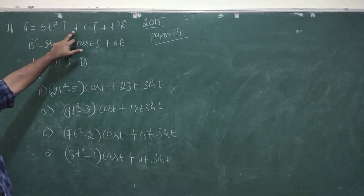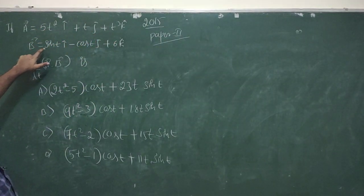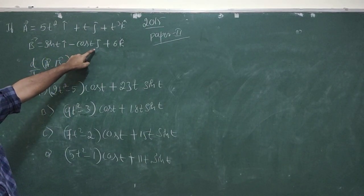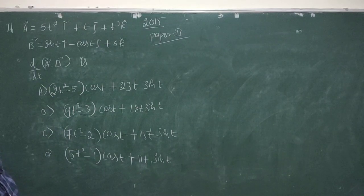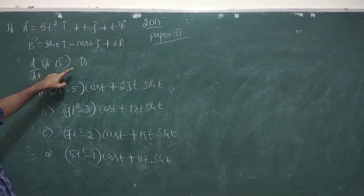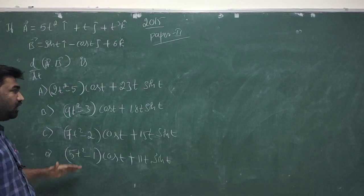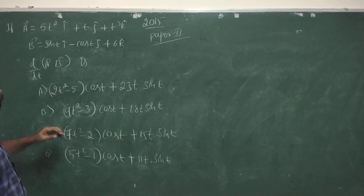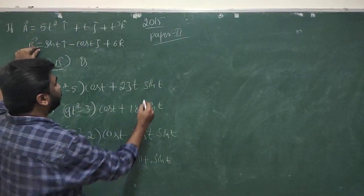The question is: if a is equal to 5t² i-cap plus t j-cap plus t³ k-cap, and b is equal to sin(t) i-cap minus cos(t) j-cap plus 6 k-cap, find d/dt of a dot b. Let's first calculate the dot product of vectors a and b.